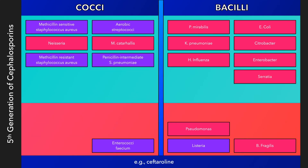Fifth generation cephalosporins, represented here by ceftaroline, are the only cephalosporins with coverage against methicillin-resistant Staphylococcus aureus. Ceftaroline is also active against penicillin-resistant Streptococcus pneumoniae and oxacillin-resistant coagulase-negative Staphylococci. This gain, however, comes at a cost — it is not effective against Pseudomonas.